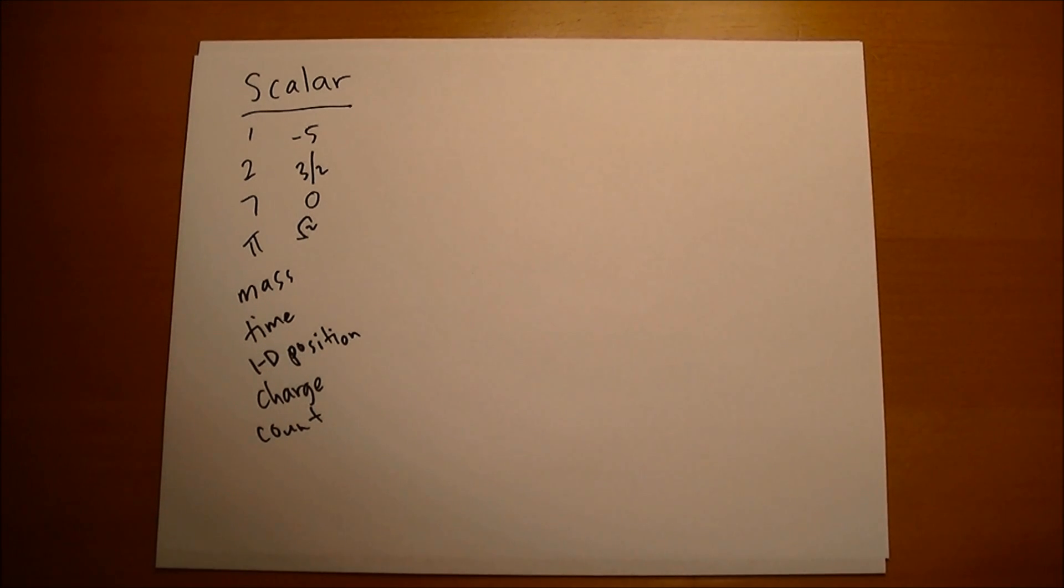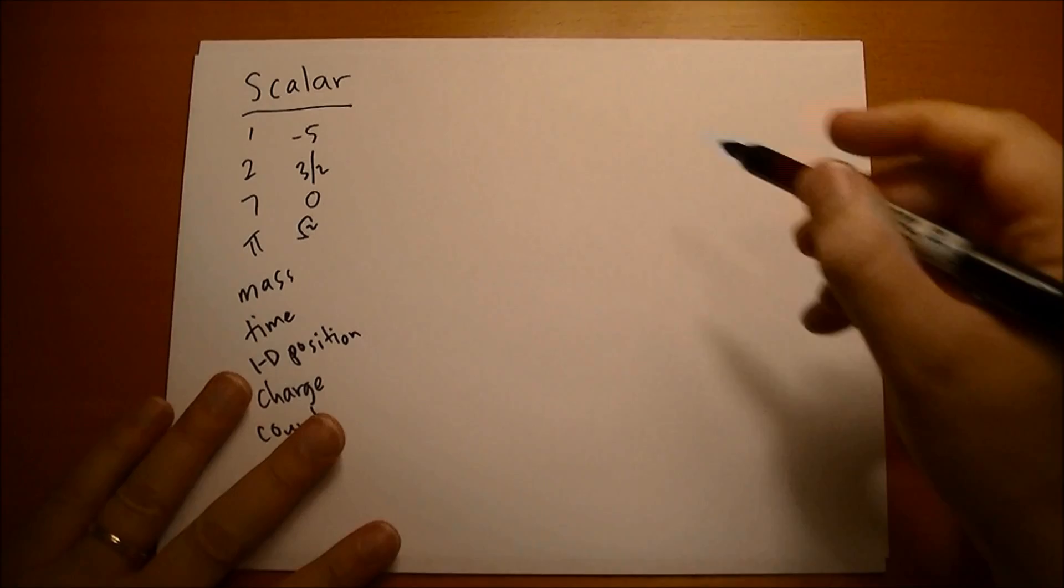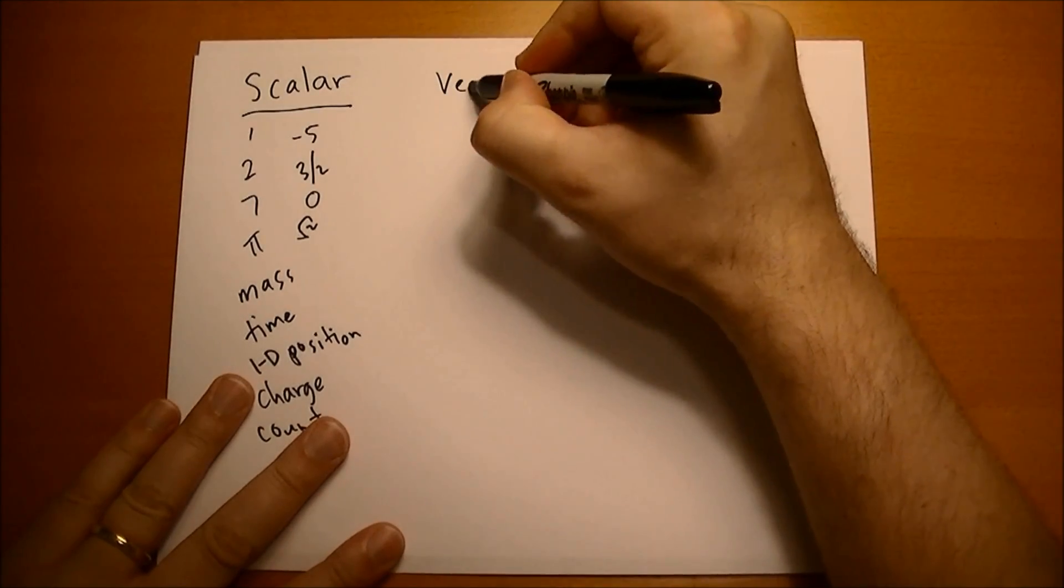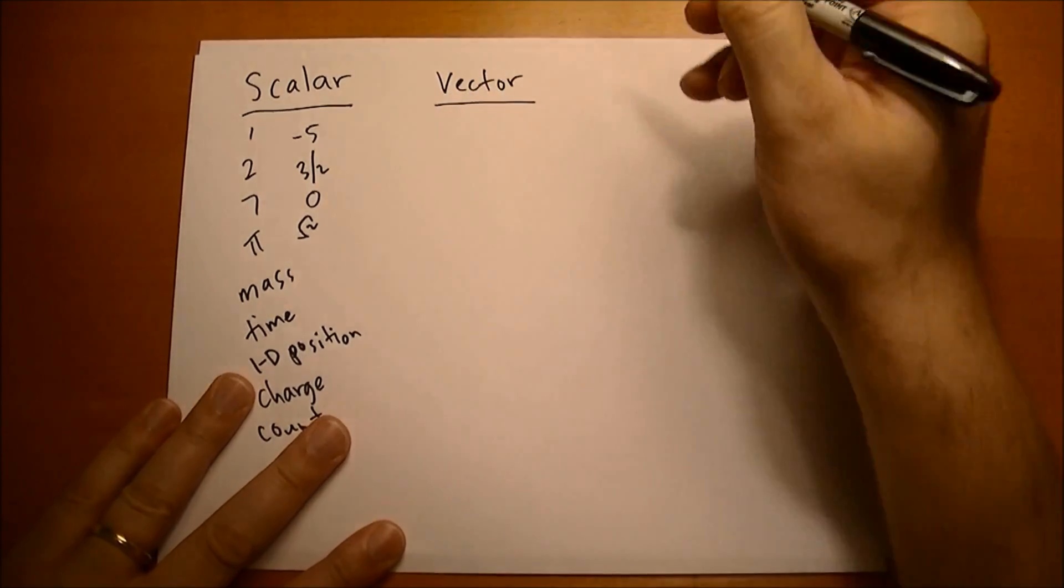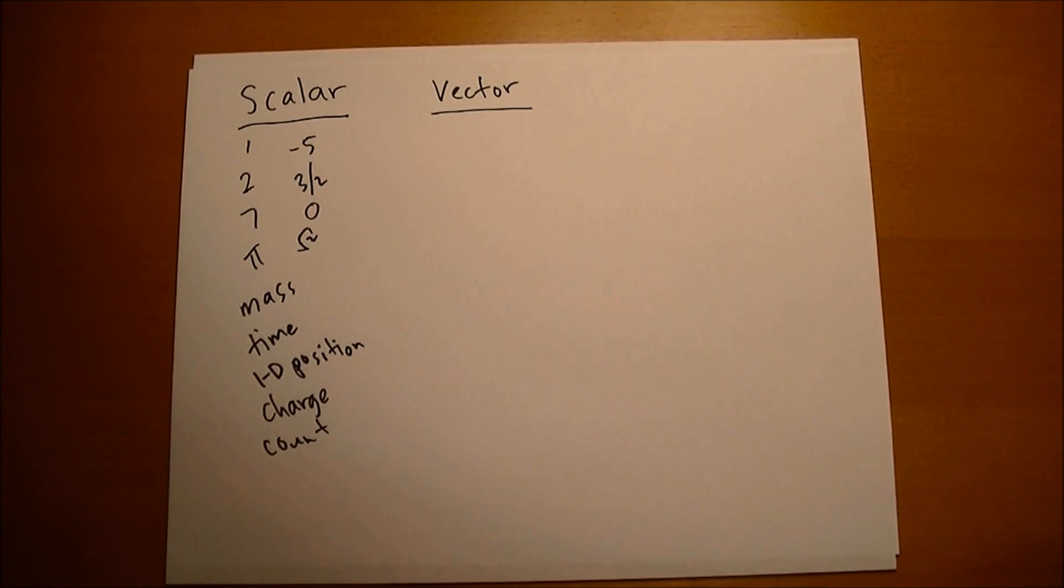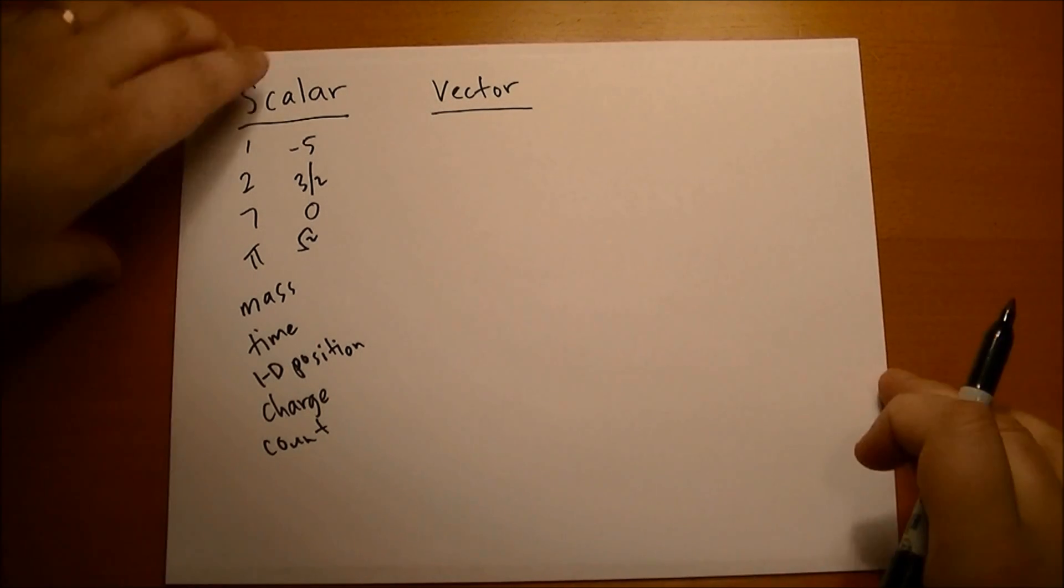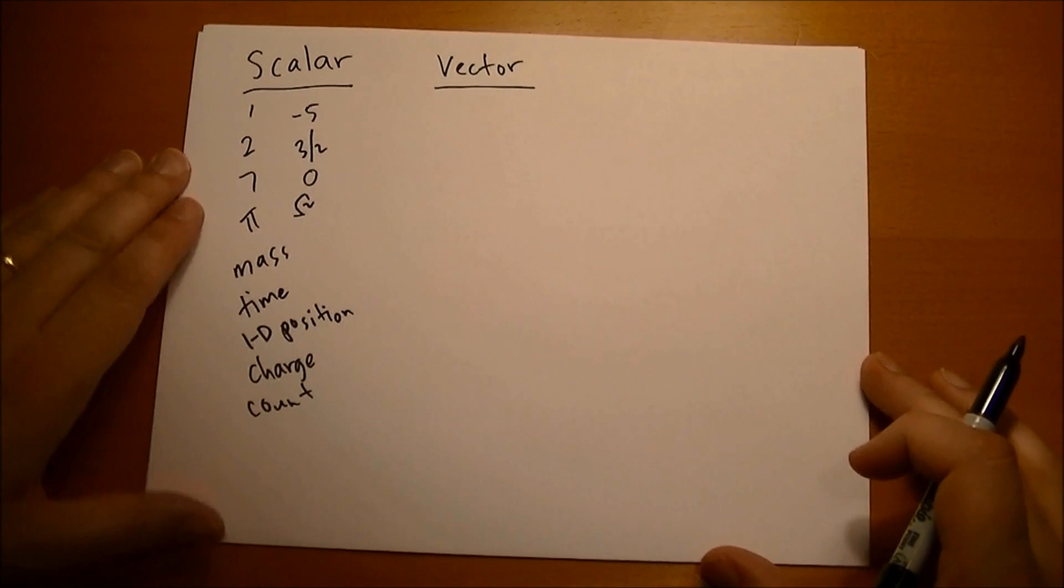Where these fall down is when you're trying to talk about motion, movement, directions. Scalars just don't have that direction component, so we have to master the concept of the vector. What is a vector? Well, a vector, unfortunately many of you learned it the wrong way.